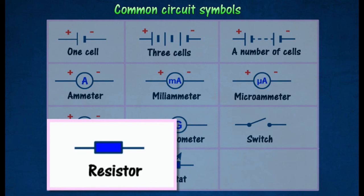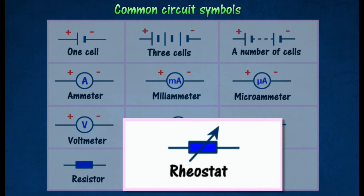A resistor is used to restrict the flow of electrical current to a particular component. A rheostat is used to control current.